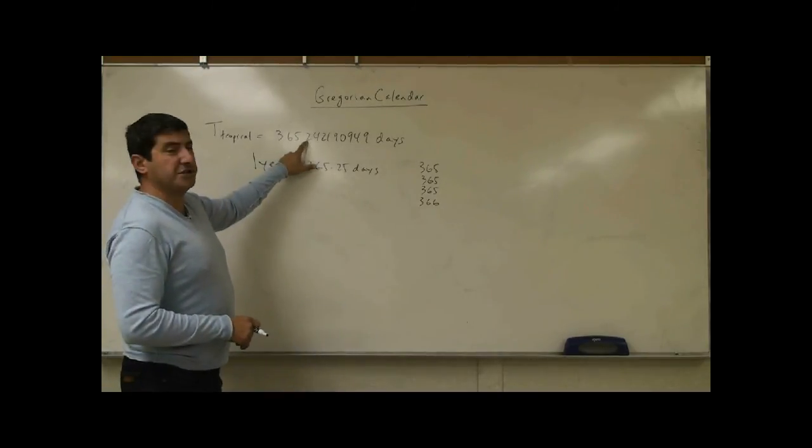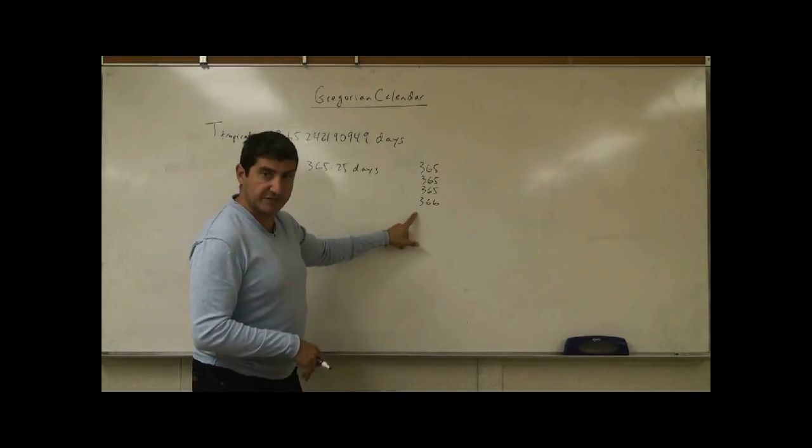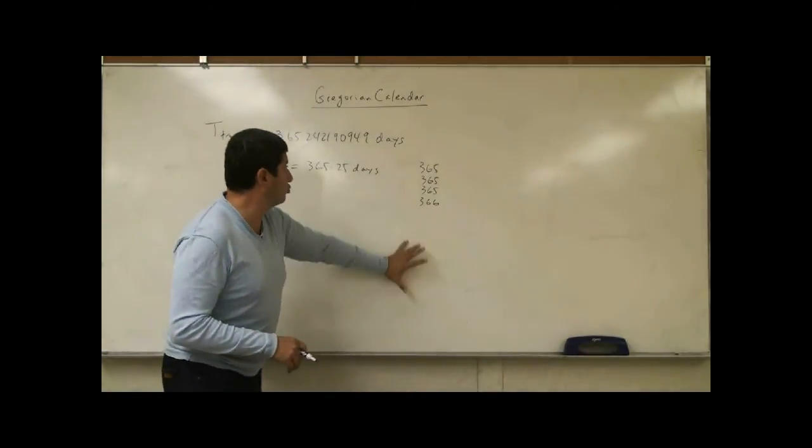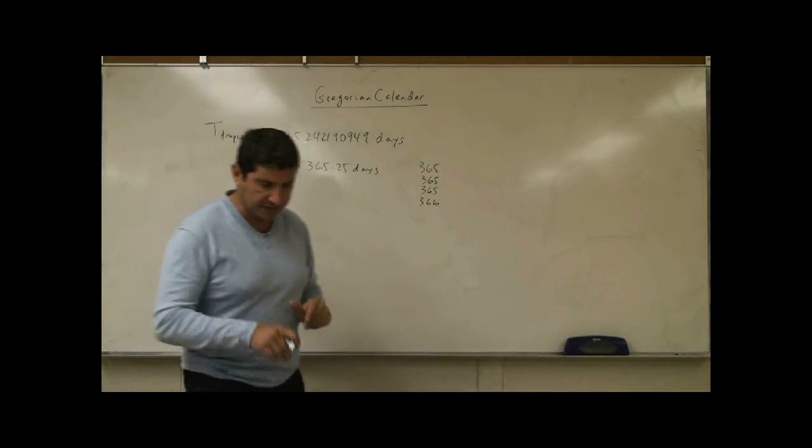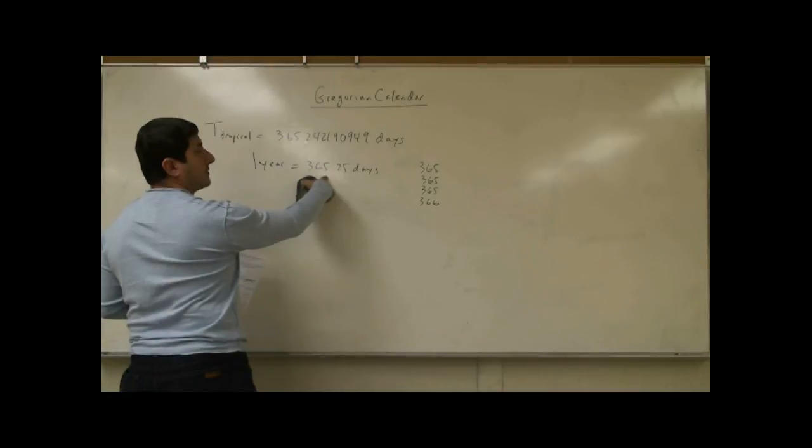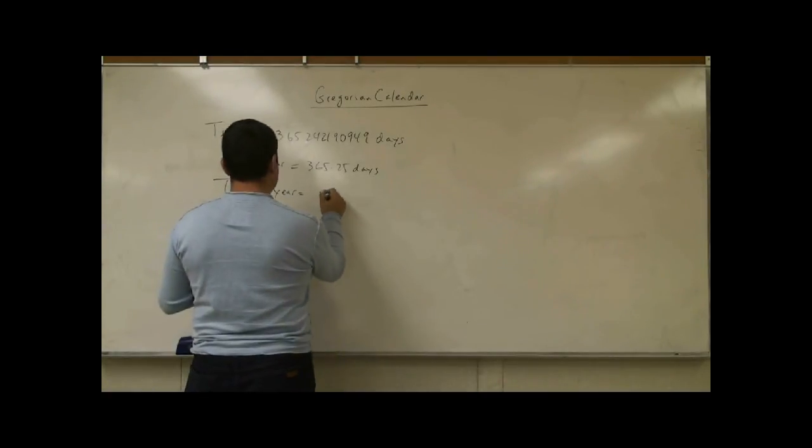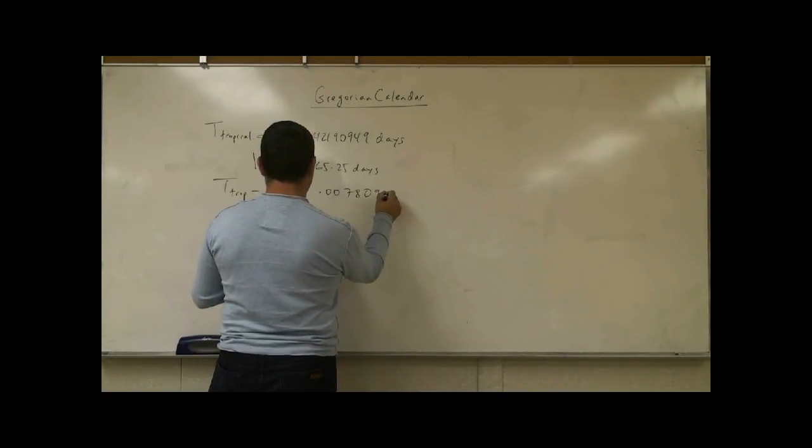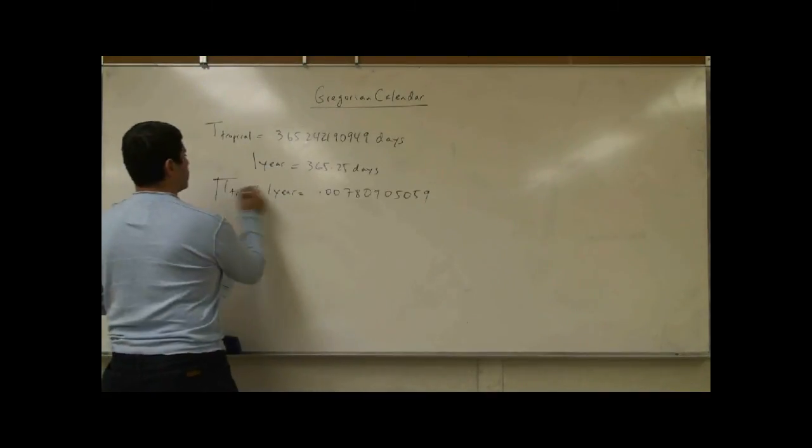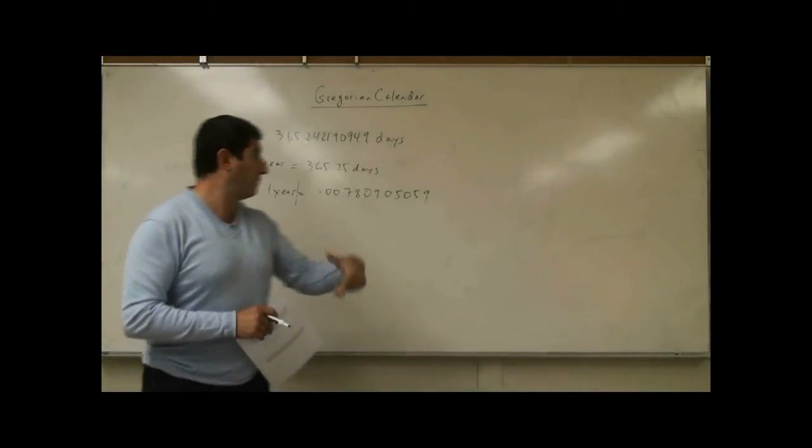But notice the tropical year is actually a little bit shorter than the 365 and a quarter. So if we keep doing this, 365, 365, 365, 366, eventually we're going to have too many number of days in a year and we're eventually going to fall too large from the tropical year. So here's the idea. Let's take 365 and a quarter and subtract the tropical year from that. So T tropical, that's going to be 0.00780905059. I'm taking the absolute value of the difference. The tropical year is shorter from the 365 and a quarter days by that amount.